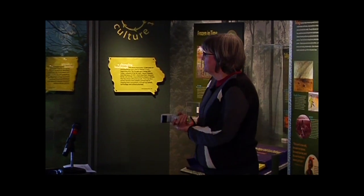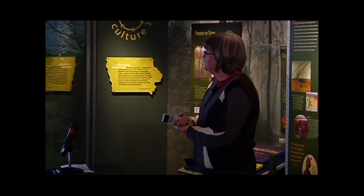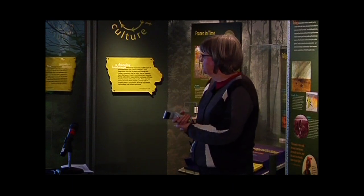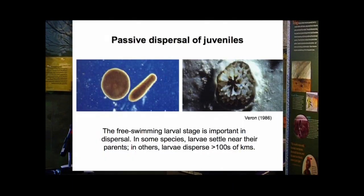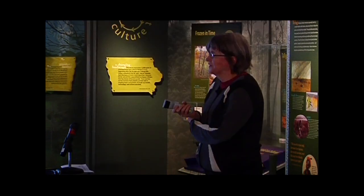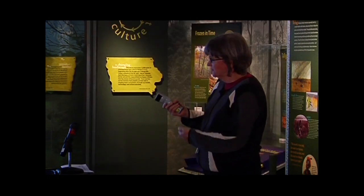Corals have a free-swimming larval stage in which they disperse. In some species, larvae settle near their parents; in others, they disperse more than hundreds of kilometers. As a result of this wide dispersal, endemism is rare, and dispersal enhances gene flow and connectivity among populations.